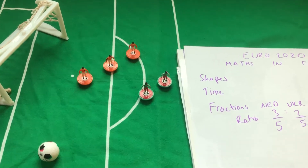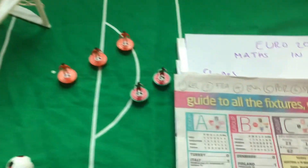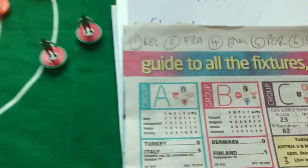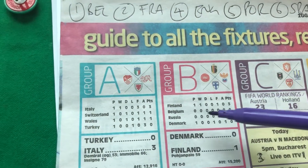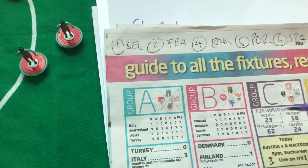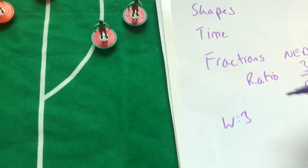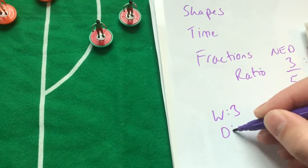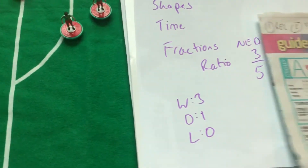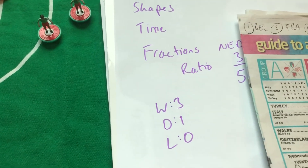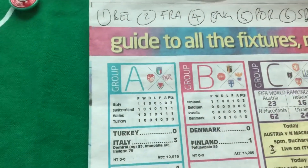The next thing we've got is obviously the points, because that's crucial. Using a newspaper here, you want to know how well your team's going to do given your results. Remember that a win gives you three points, a draw gives you one, and a loss gives you zero. So for England's big game tomorrow, they're hoping they're going to get another win, because six points will get you through.